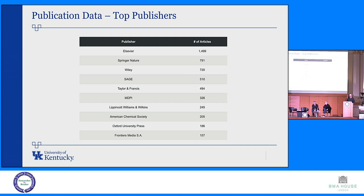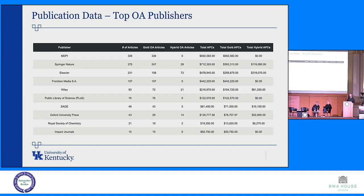Looking at our top publishers overall, no surprises for a research-intensive university: Elsevier, Springer Nature, Wiley, SAGE, Taylor and Francis — the Big Five — plus a couple of gold OA publishers in the top 10. Breaking that down by top OA publishers, MDPI is our top OA publisher, and we've broken down the total APCs paid to each of those publishers — gold APCs and hybrid APCs separately.